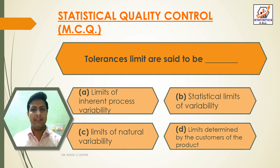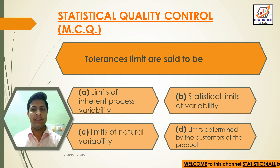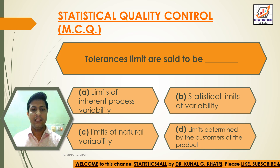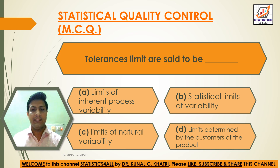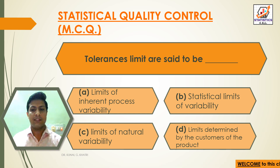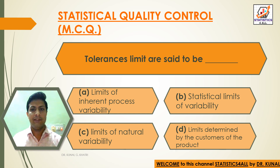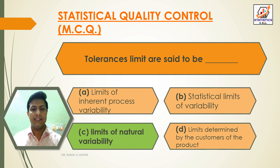Question 3: Tolerance limits are said to be: Option A: Limits of inherent process variability, Option B: Statistical limits of variability, Option C: Limits of natural variability, Option D: Limits determined by the customers of the product. Answer: Option C — Limits of natural variability.